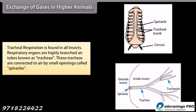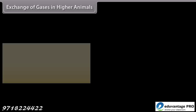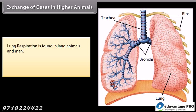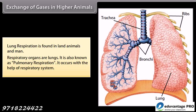Tracheal respiration is found in all insects. The respiratory organs are highly branched air tubes known as trachea. These tracheas are connected to air by small openings called spiracles. Lung respiration is found in land animals and man. The respiratory organs are lungs. It is also known as pulmonary respiration, and it occurs with the help of the respiratory system.